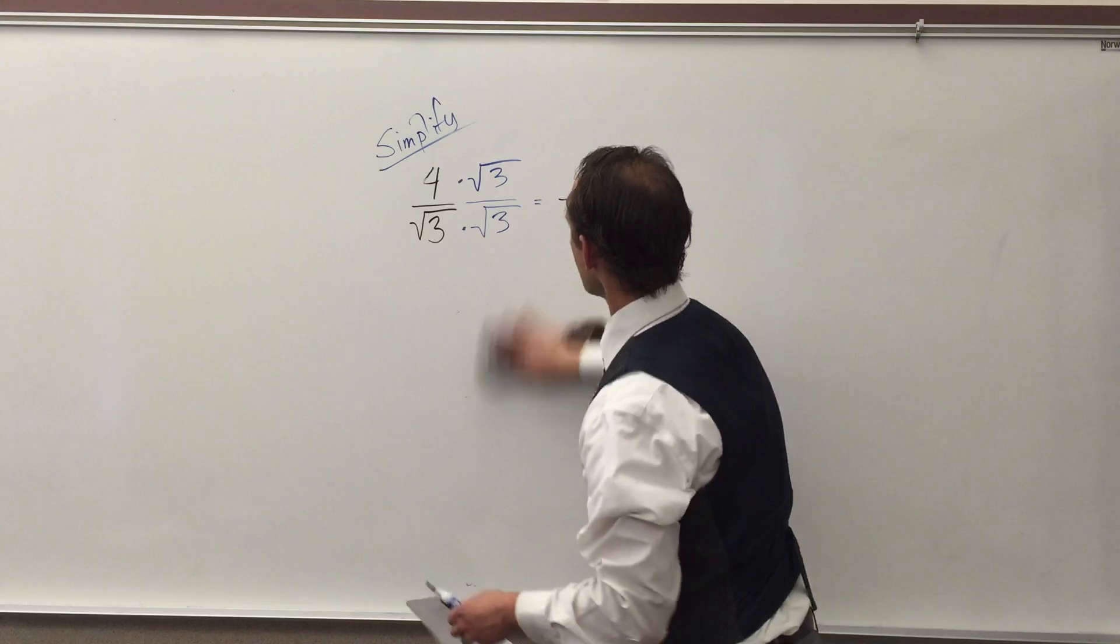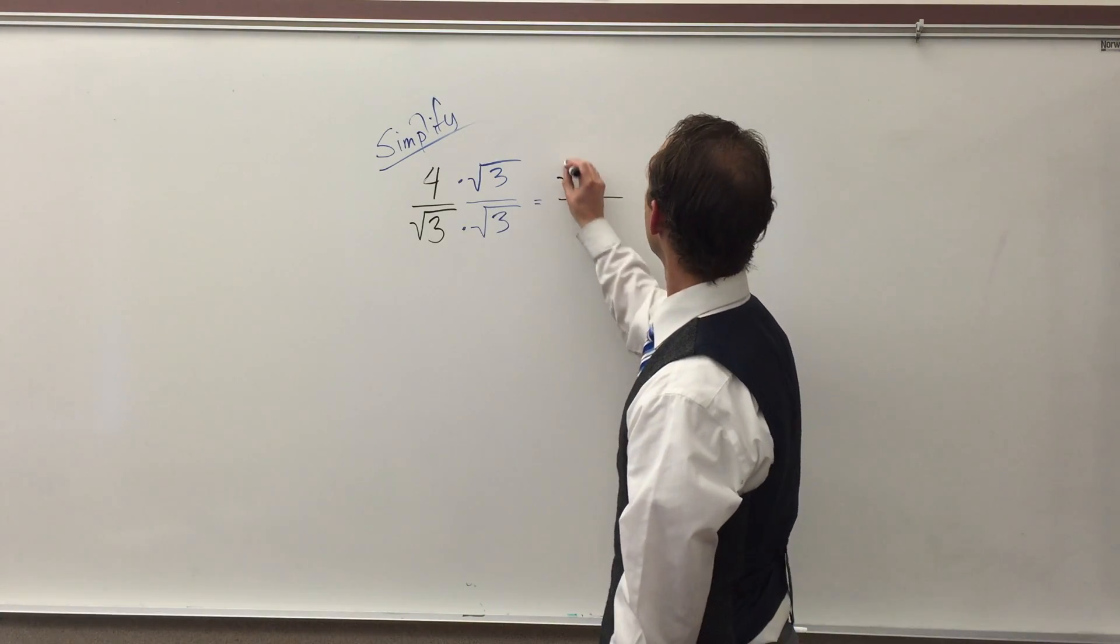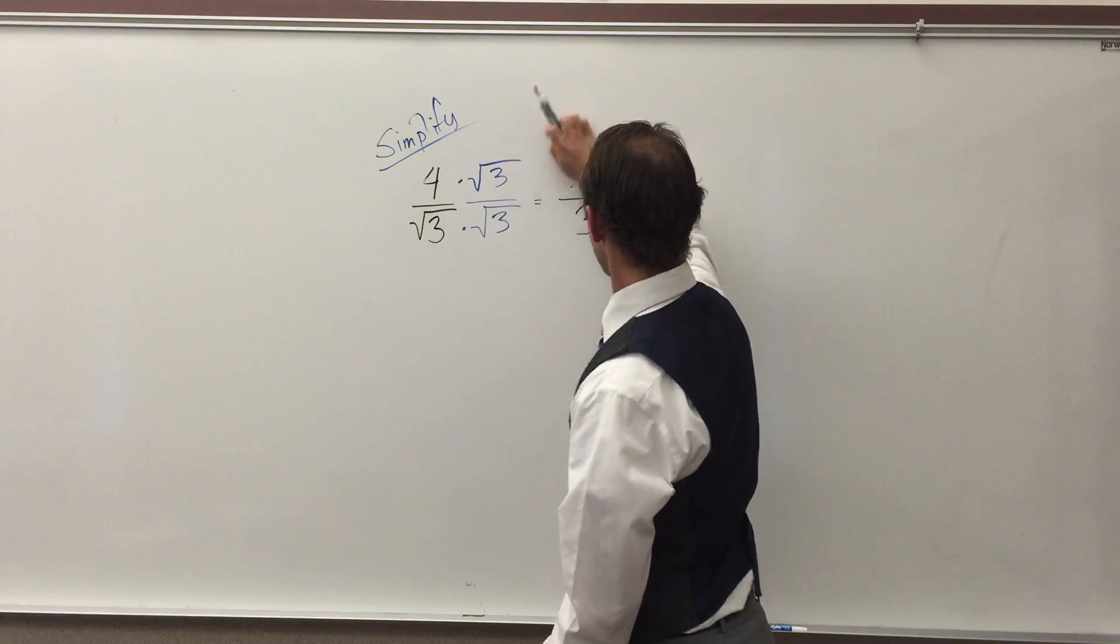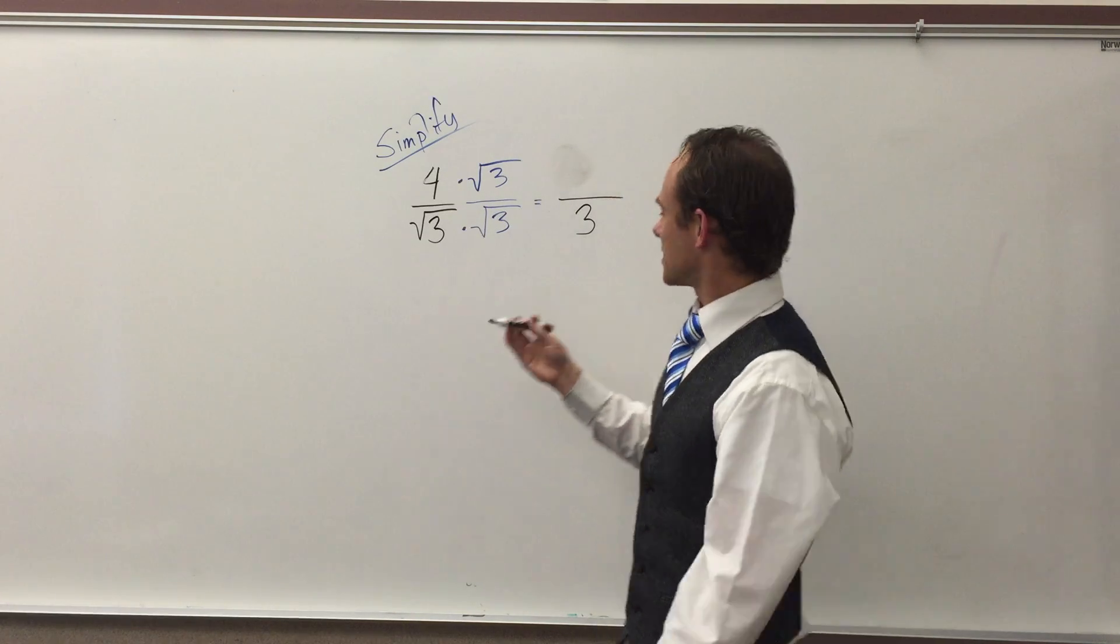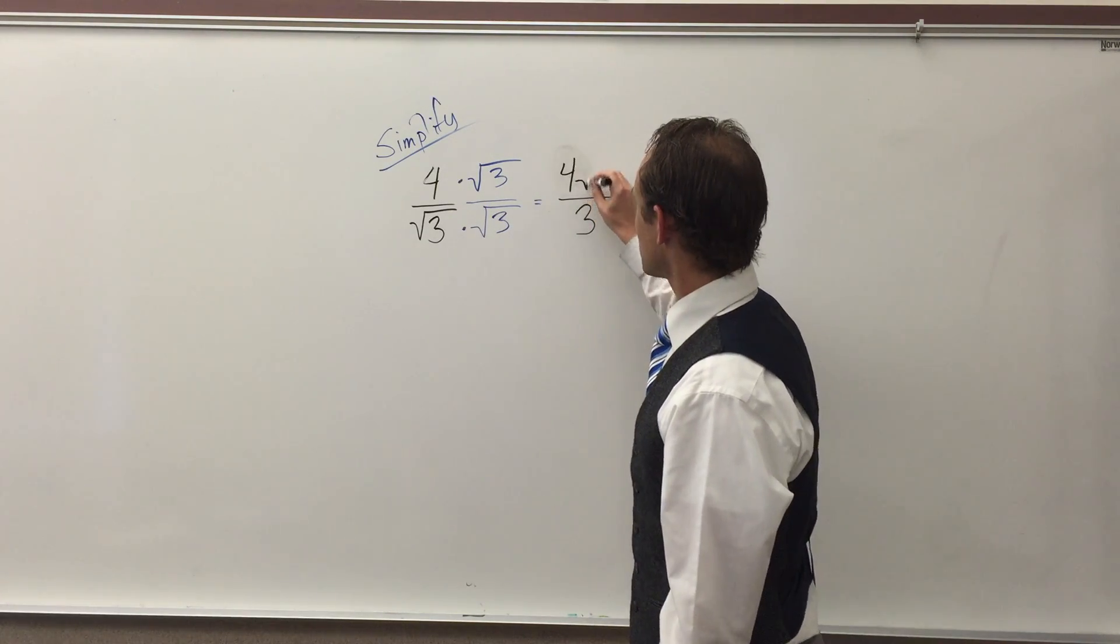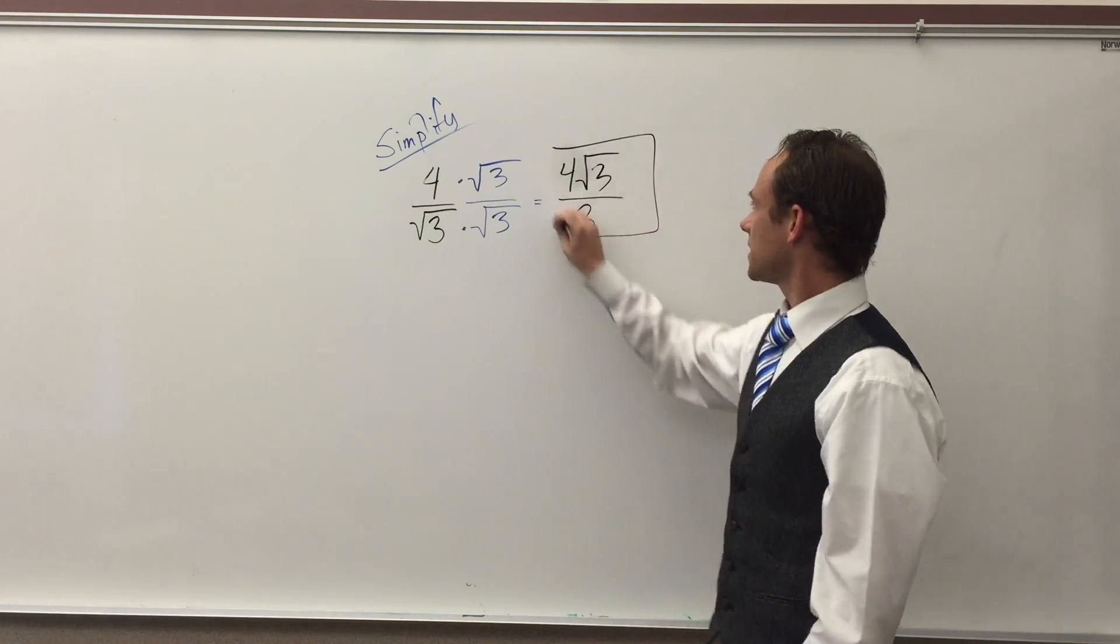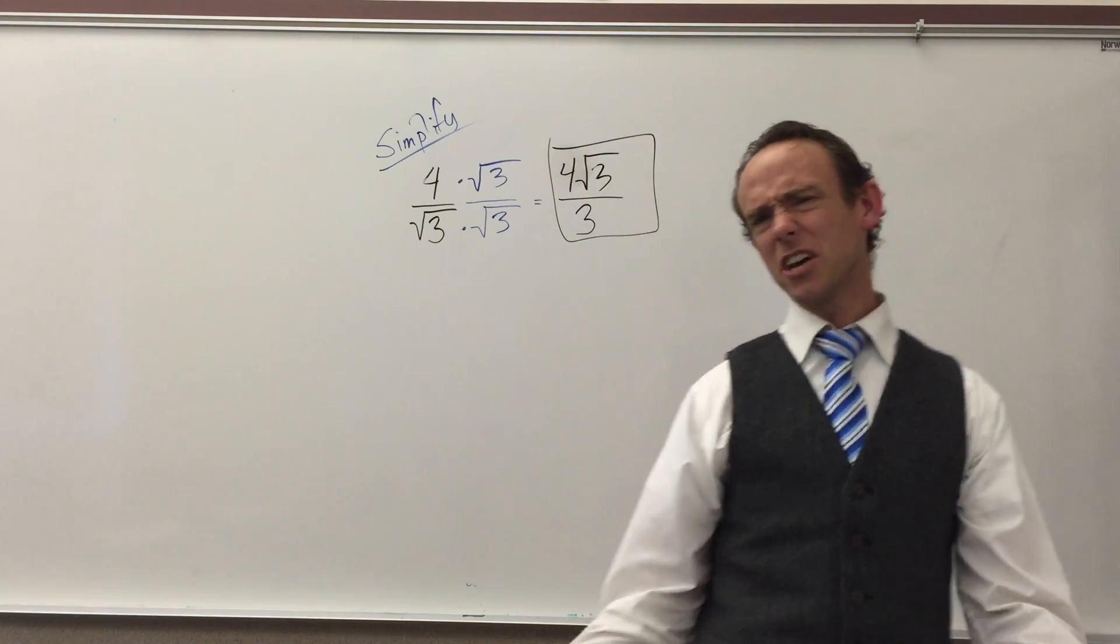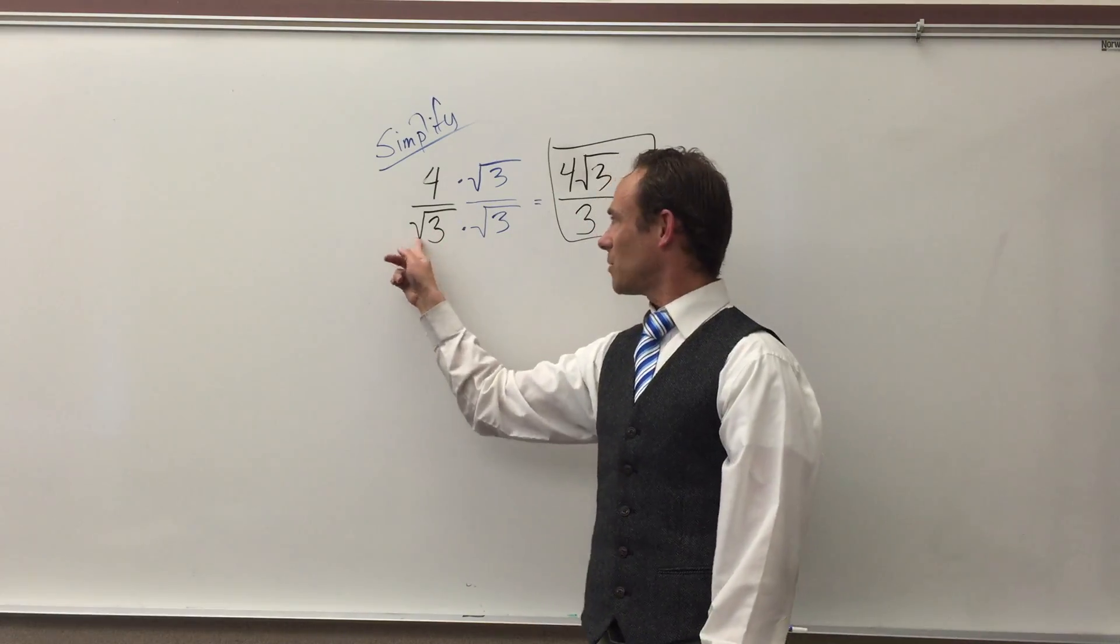So let's go here. We got, oh yeah. The four is outside the radical sign, and the three is inside the radical sign. So we don't multiply those ones. Money.